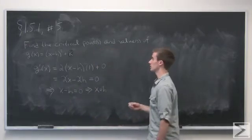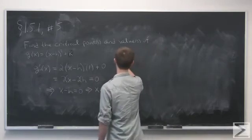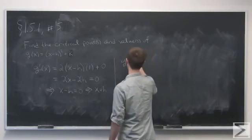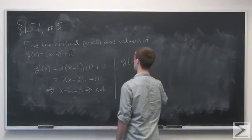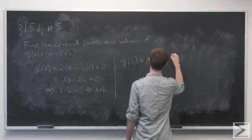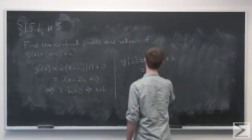So the critical value, the value that g takes on at the point x = h, is then g(h) equals h - h squared plus k, which is just 0 + k, or k.